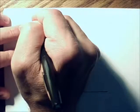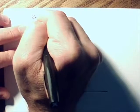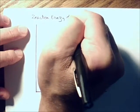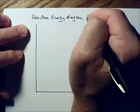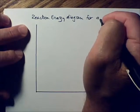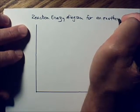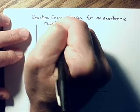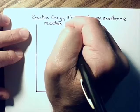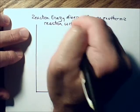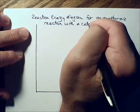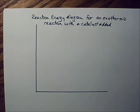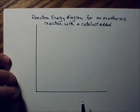I'm going to start with a reaction energy diagram for an exothermic reaction, with a catalyst added. In a reaction energy diagram, we're looking at the progress of the reaction.